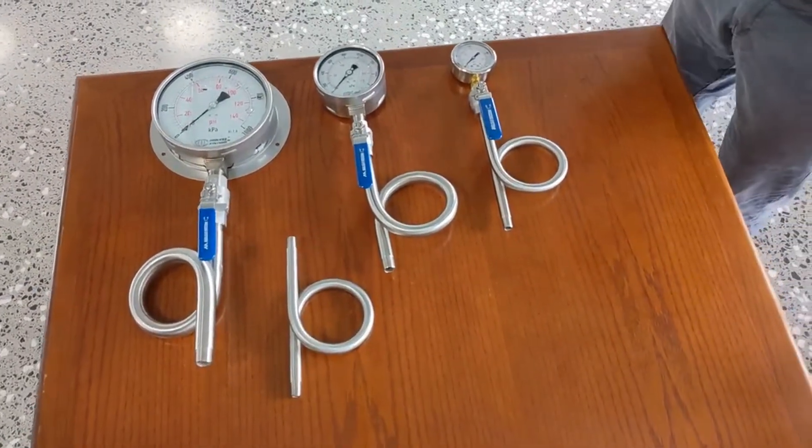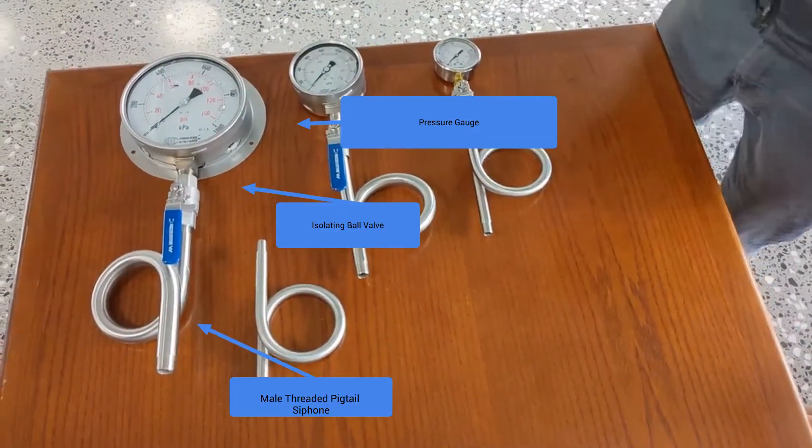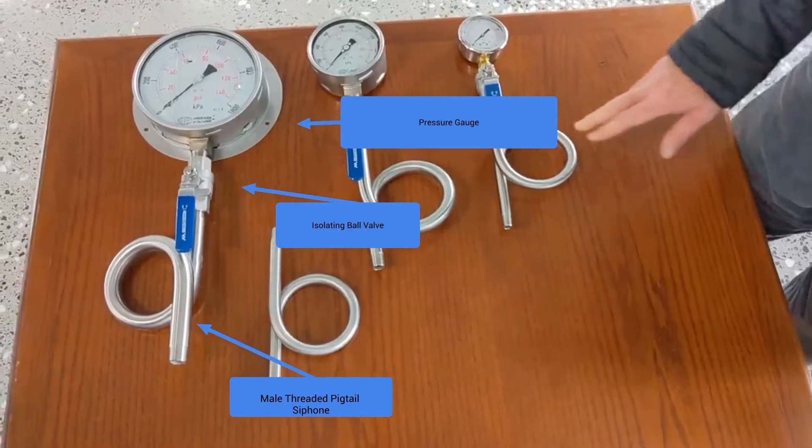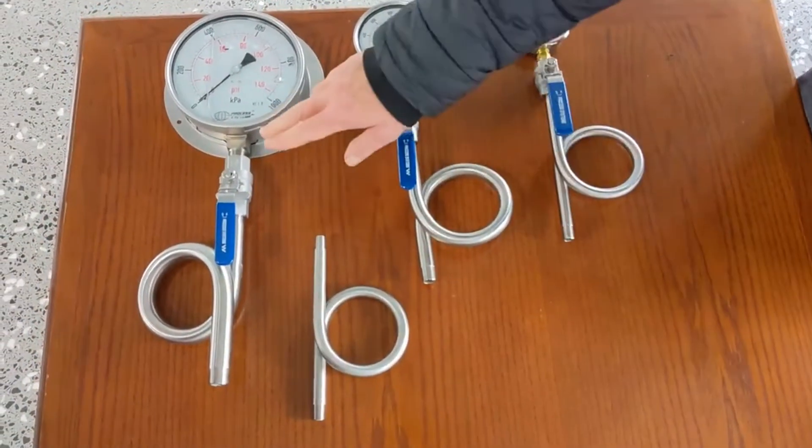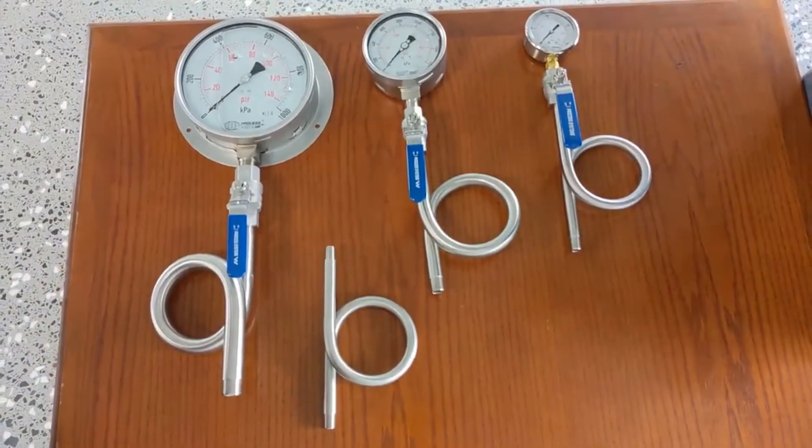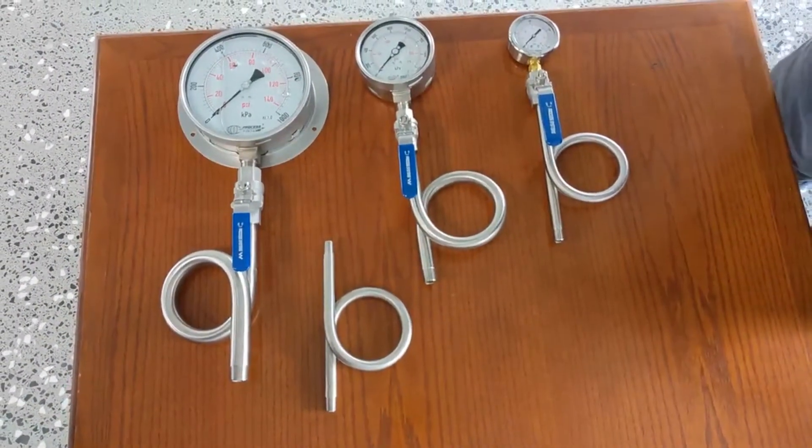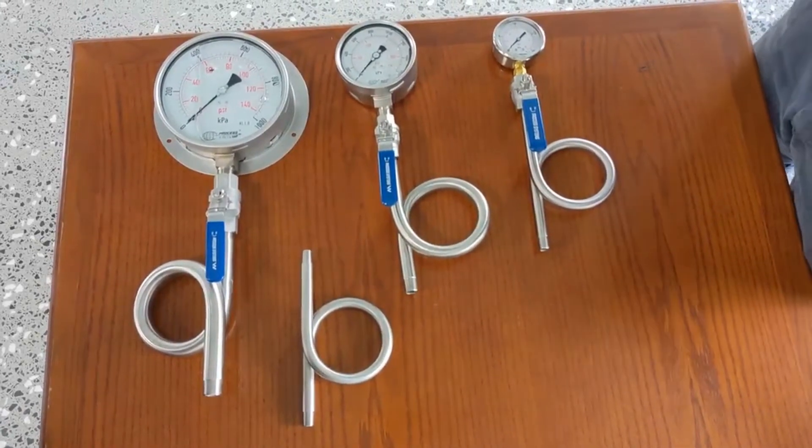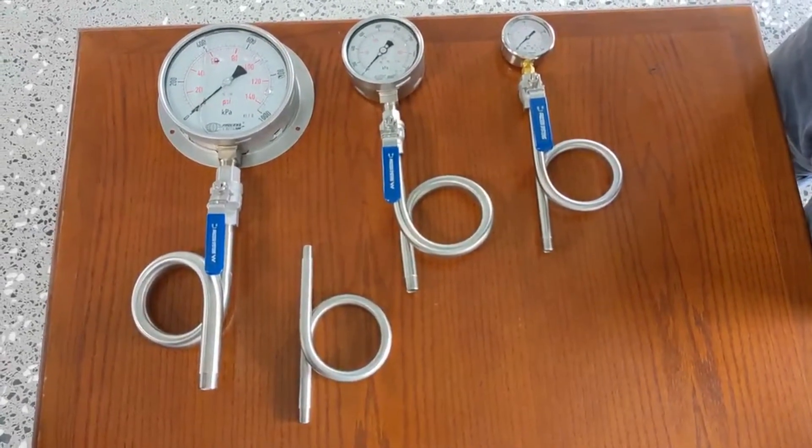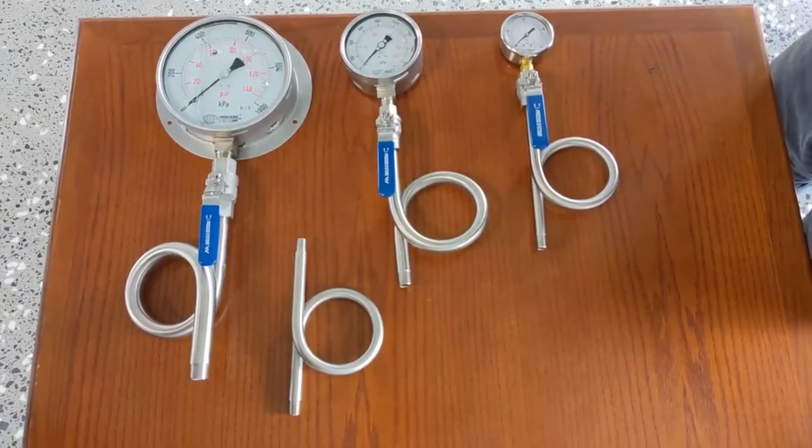Today we're going to have a look at our stainless steel pigtail siphons. You can see a selection here - we've got them from quarter inch, three-eighths up to half inch. They're bent out of schedule 8316L stainless steel pipe, and we use 316L because you don't get the brittle corrosion that sometimes happens in 316 due to its low carbon content.